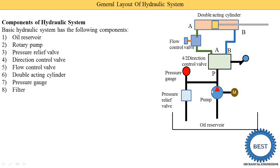The last component is the filter. Here the 4-port valve is provided and its return port is labeled T. The return oil is supplied to the filter. This component is called the filter. In some books, the filter is provided at the inlet of the pump; in others, it is provided at the return pipe. If you see the filter at the inlet of the pump, that is also correct.